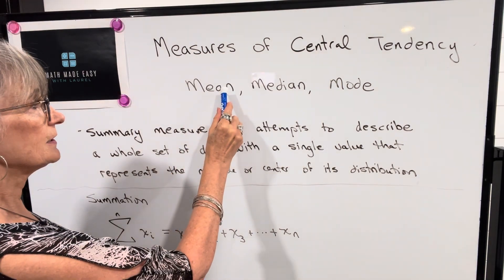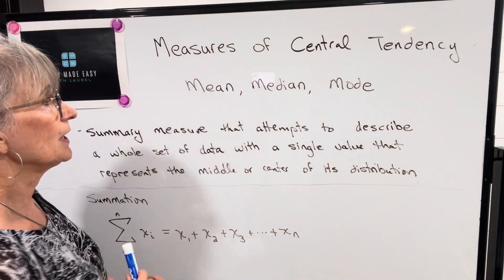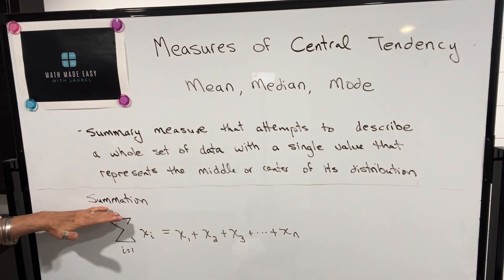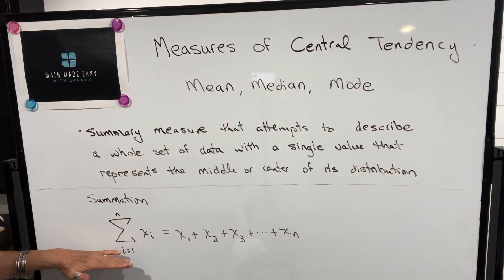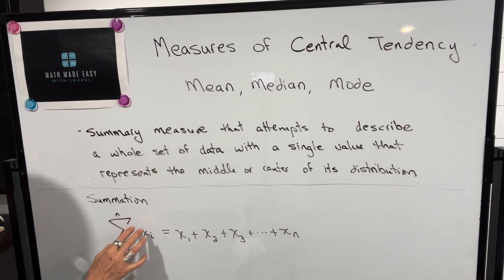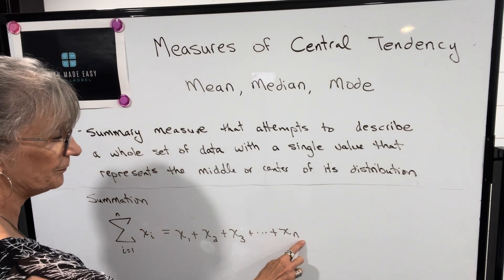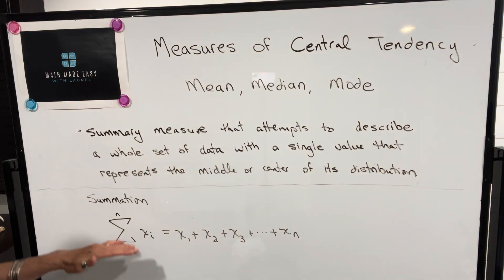Before getting into the definition of mean, I want to talk about summation notation, which looks like this. It looks a little bit intimidating, but this symbol means sum or summation of x_i's from i equals 1 to n. So we start with 1, so x1 and x2 and x3 and so on up to xn, and we add all of those numbers up. So that's all that means.